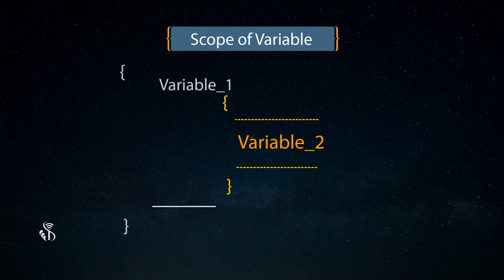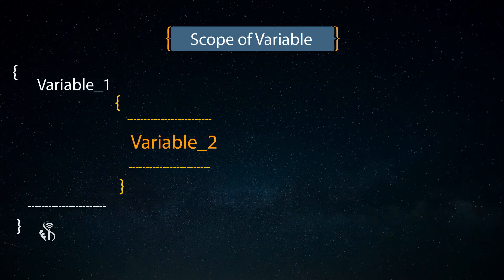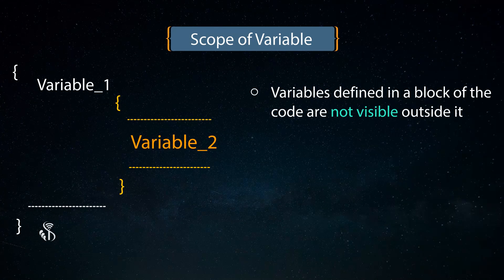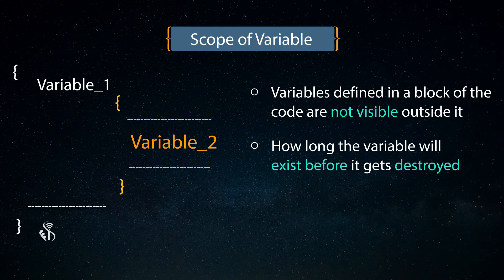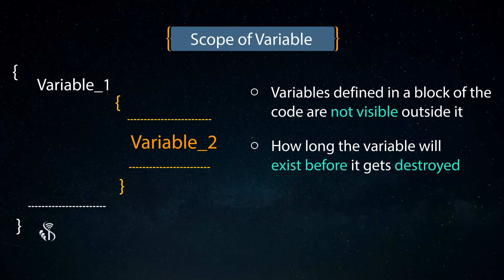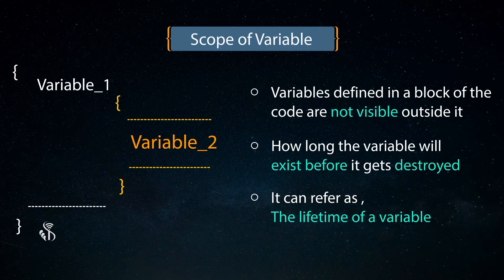Generally, the variables which are defined in a block of the code are not visible outside it. Let us also understand how long the variable will exist before it gets destroyed. We refer to this as the lifetime of a variable.